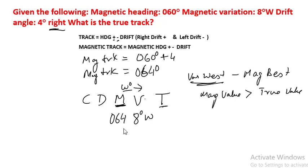Here, all you have to understand is variation west, 8 degrees west, we will subtract 8 degrees from 064.